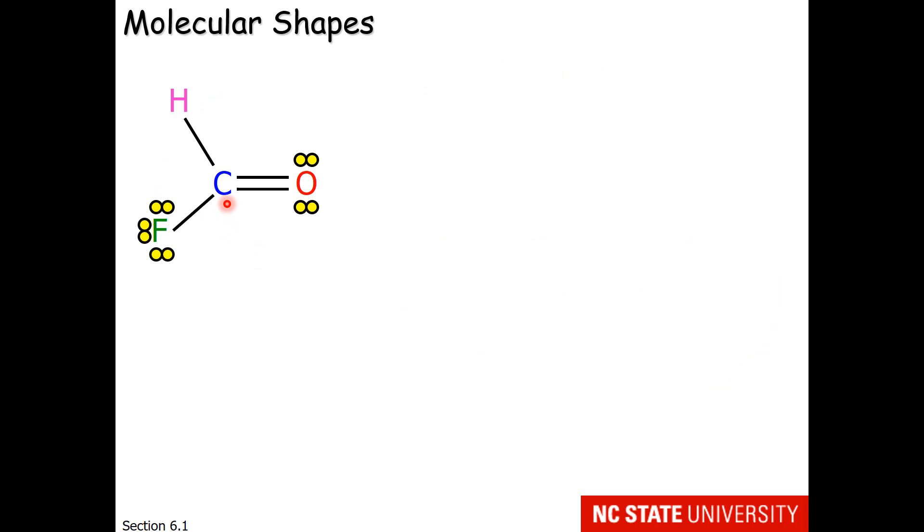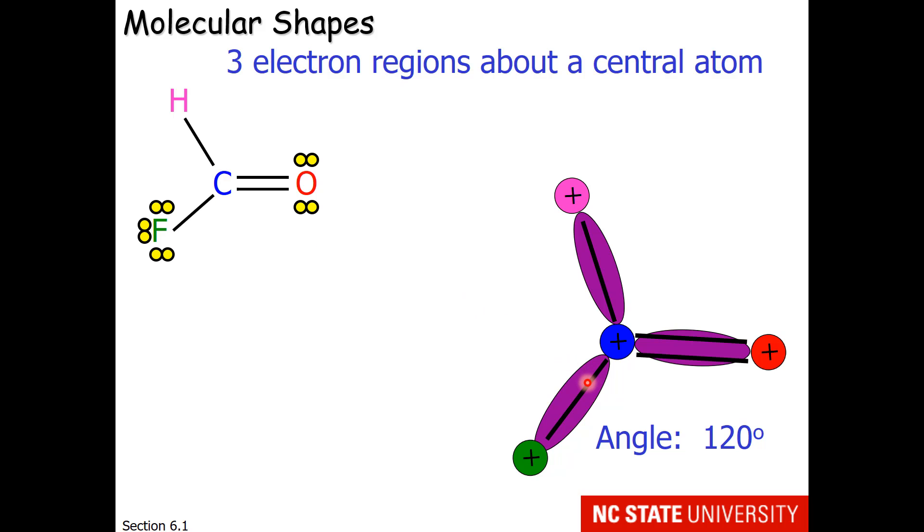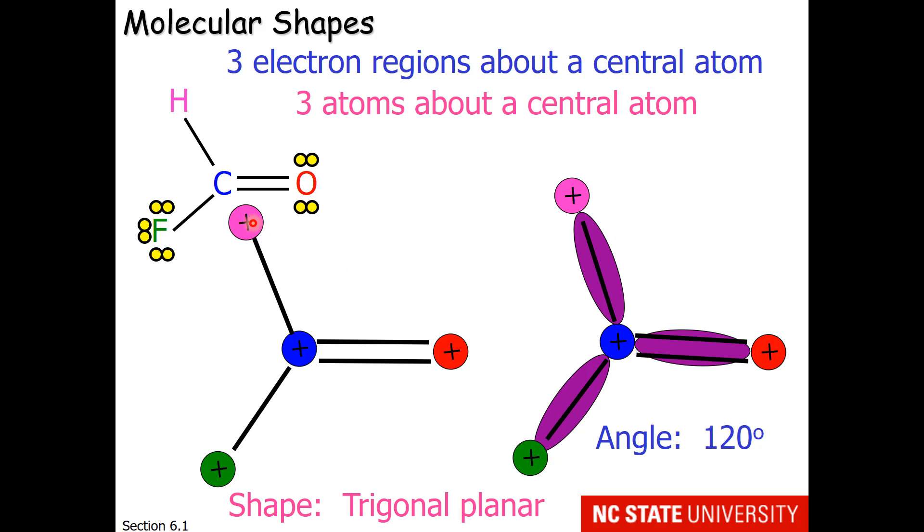What about if we have an atom with three electron regions? This carbon has a single, a single, and a double bond around it. Well, the electron regions are going to be 120 degrees apart. So this blue is the carbon in the middle, and the other atoms are represented around it. The shape we would give this is trigonal planar. I'm sure that you can see if you draw a line from the pink to the green to the red, that is a triangle. This is a planar molecule. So I have this little drawing up here to remind you that it's flat.